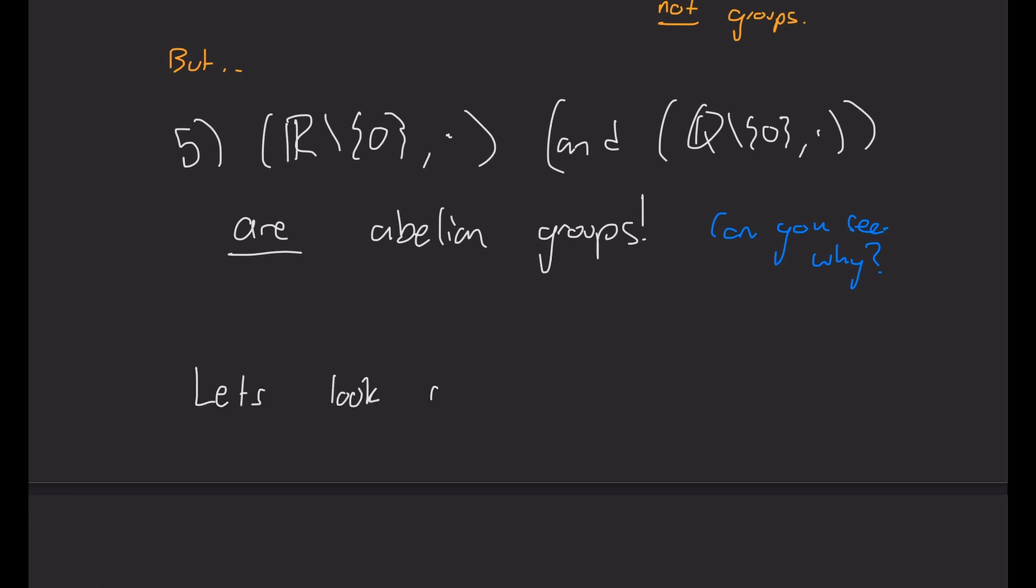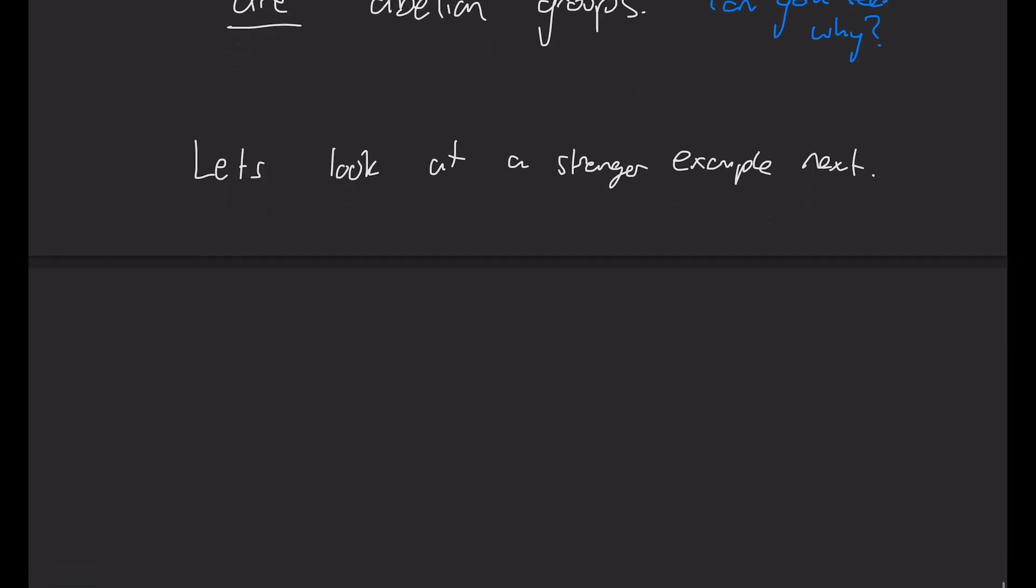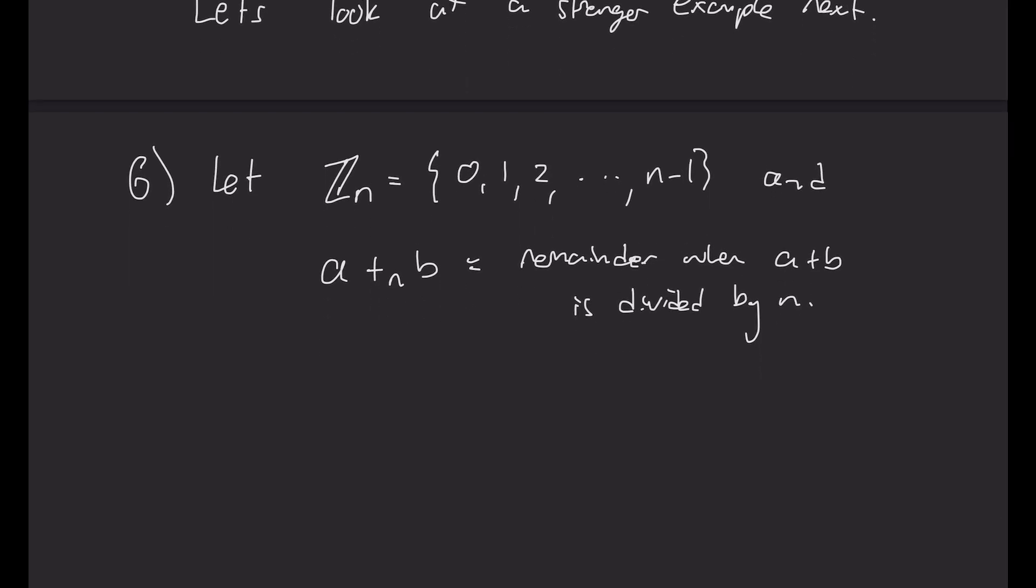So those are kind of the standard examples that you've encountered a lot. Let's look at a slightly stranger example, which you may not have encountered, at least formally. And I'm going to use this set that I'm going to call Z sub n. So that Z is the same as integers. I'm going to take all the integers. So the set Z_n is all the integers from 0 to n minus 1. So there's only n of these integers. And I'm going to define this special plus, plus with a subscript n, to be defined by a plus subscript n b is the remainder when a plus b, the usual plus, is divided by n. So you might recognize this as like a mod function.